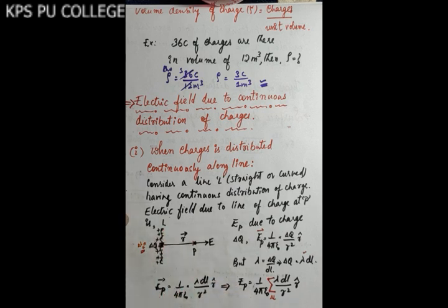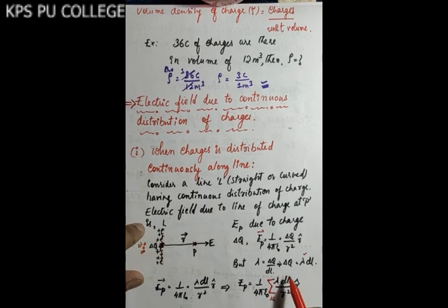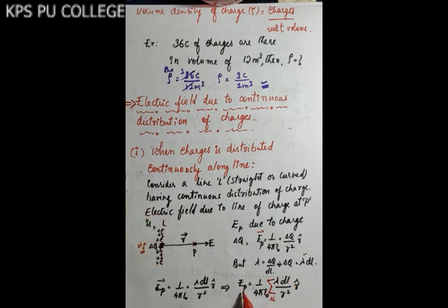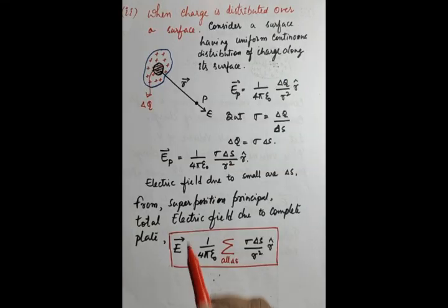The total electric field E_p is equal to (1/4πε₀) times the summation of (λ · δl / r²) · r̂ over all small elements. Summing all such contributions over the entire line gives the total electric field at point P. Next, we consider the case when the charge is distributed over a surface.